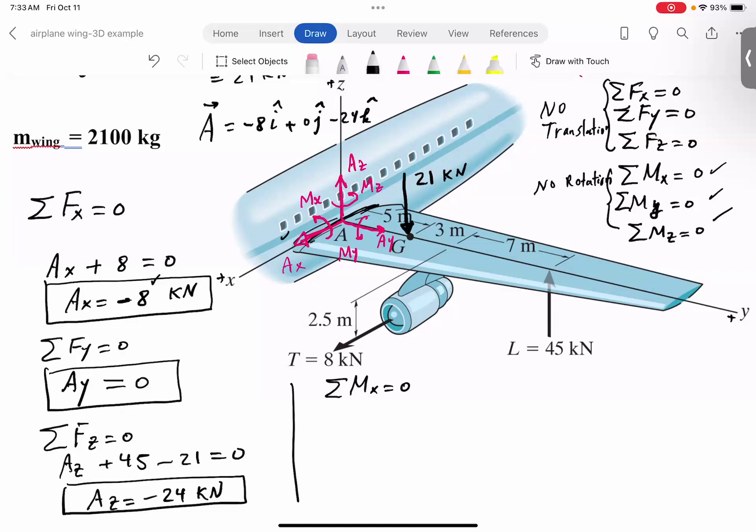Okay. So look, in the X direction, what forces have moment about X axis? Notice that the thrust is parallel to X axis. It cannot cause rotation. That leaves only the weight and the lift. So look, the moment of the lift, which is 45 times this distance here, 7, 3, 5, that's 15.